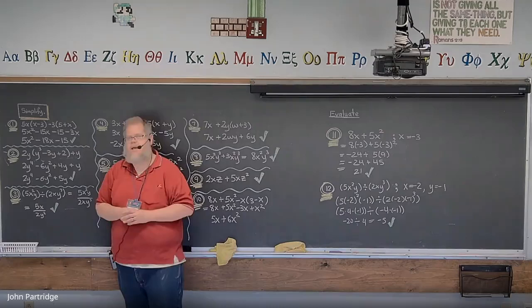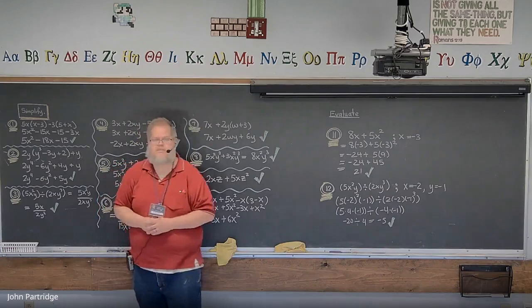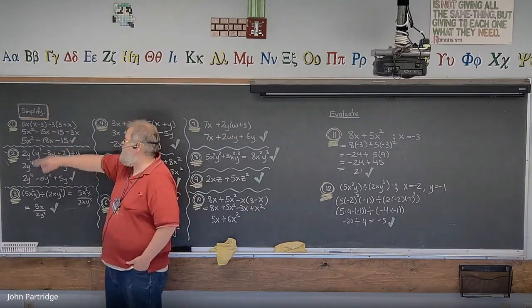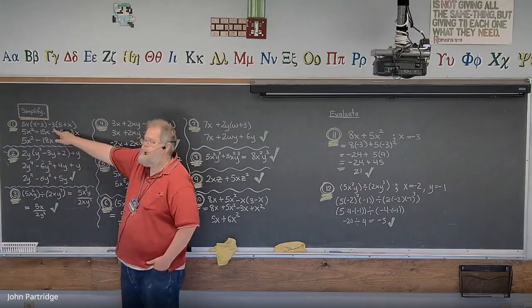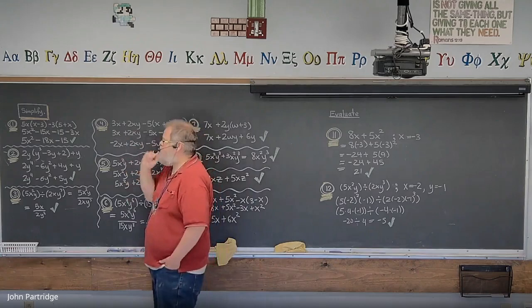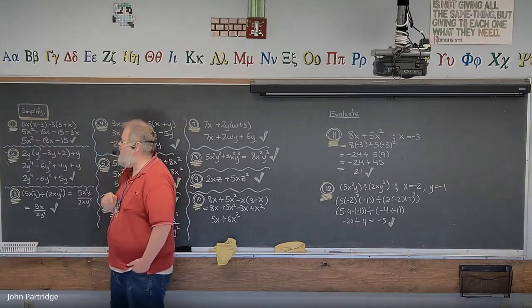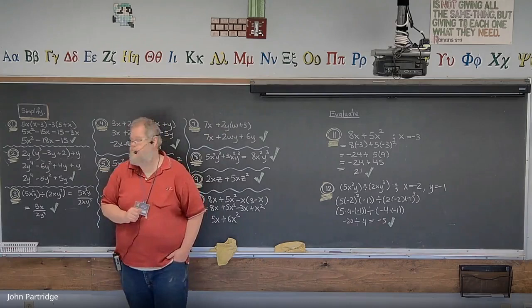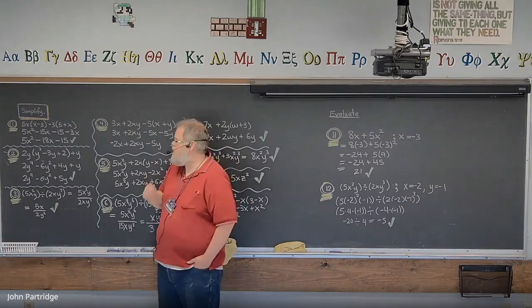Problem 1: simplify 5x(x - 3) - 3(5 + x). We use the distributive property. Distributing 5x gives 5x² - 15x. Distributing the negative 3 gives -15 - 3x. Are there like terms? Yes — -15x and -3x combine. Final answer: 5x² - 18x - 15.